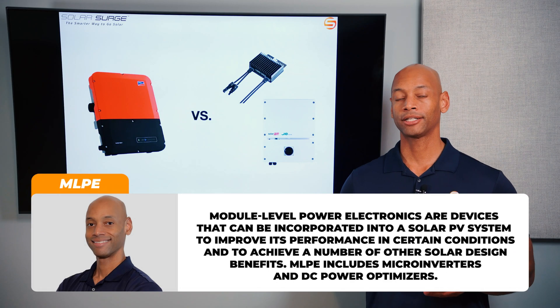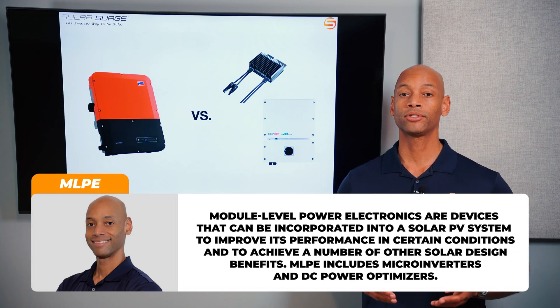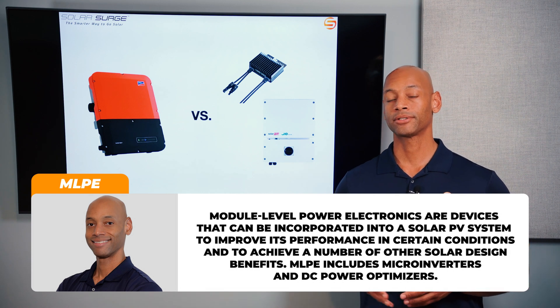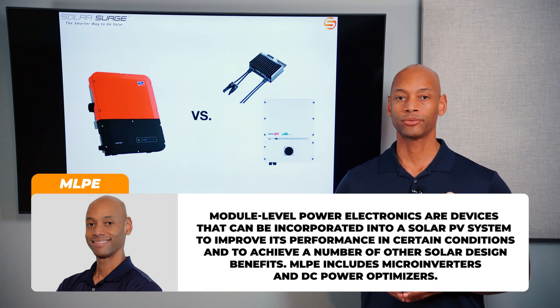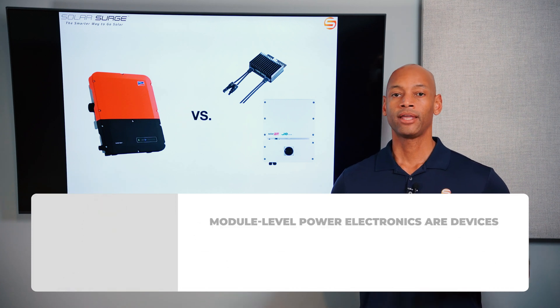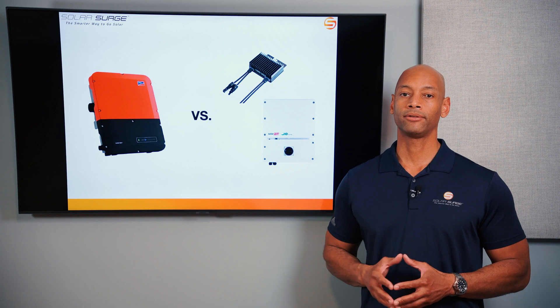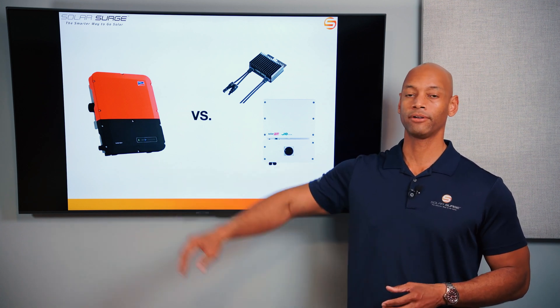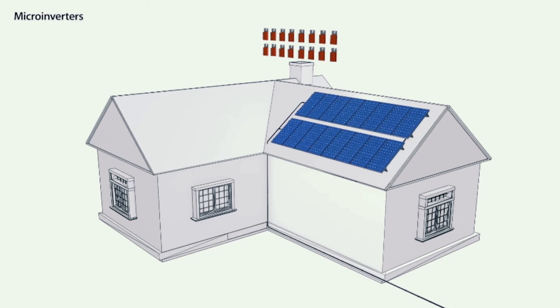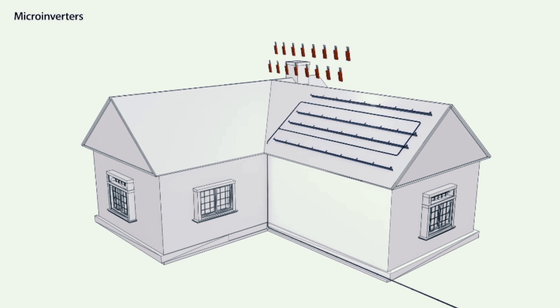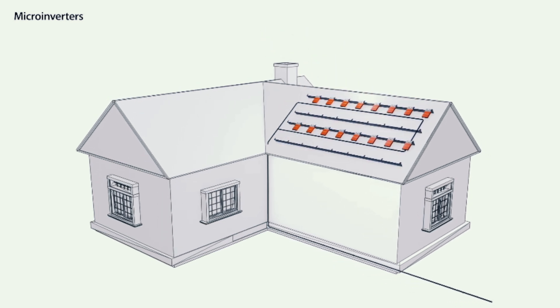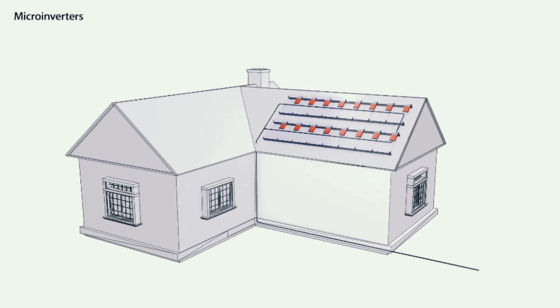That's why module-level power electronics came about. When we talk about module-level power electronics, we're typically talking about either microinverters or DC optimizers. Microinverters came out first in the late nineties. The way they work is by placing a small inverter on each individual solar panel, so instead of a central string inverter doing all the conversion, you have a microinverter literally wired underneath each solar panel performing the DC-to-AC power conversion.